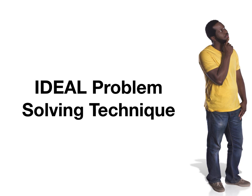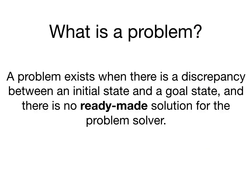In this brief presentation, I'd like to talk about a problem-solving technique called IDEAL. First, we might ask ourselves, what is a problem? A problem exists when there is a discrepancy between an initial state and a goal state, and there is no ready-made solution for the problem solver. There's somewhere that you're at and some goal you want to reach, but there's not an obvious way to get to that goal. This is what we're defining as a problem.